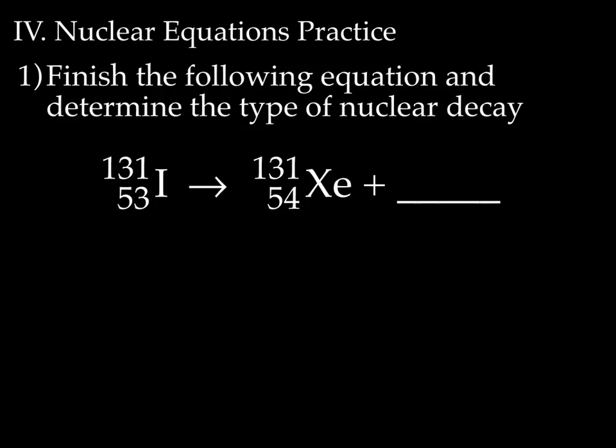Let's try this. Make sure you have your periodic table handy and try to do this with me or even before me. So we're going to finish the following equation and determine the type of nuclear decay. Let's start with the masses. We have 131 on this side of the equal sign and 131 on the other side. So what plus 131 equals 131? That would be a zero.